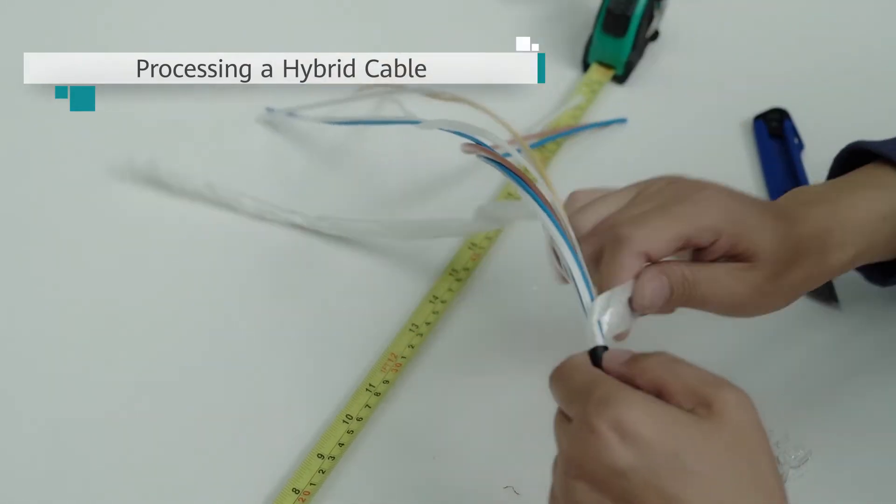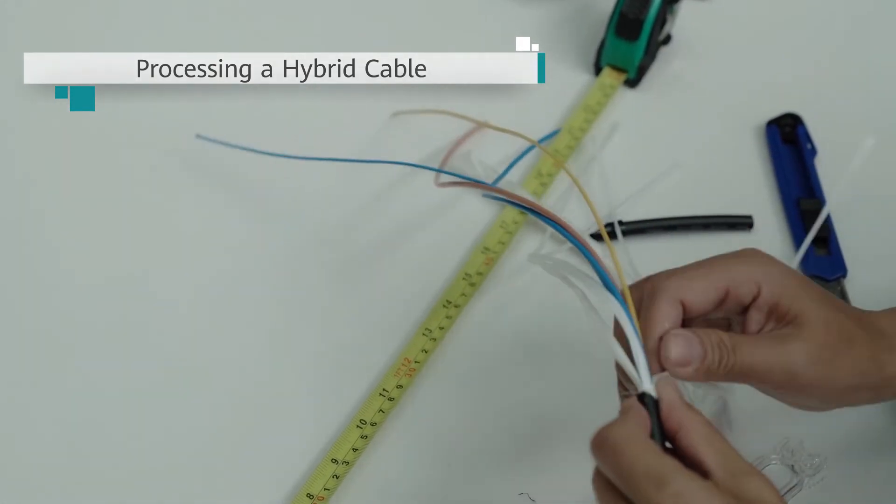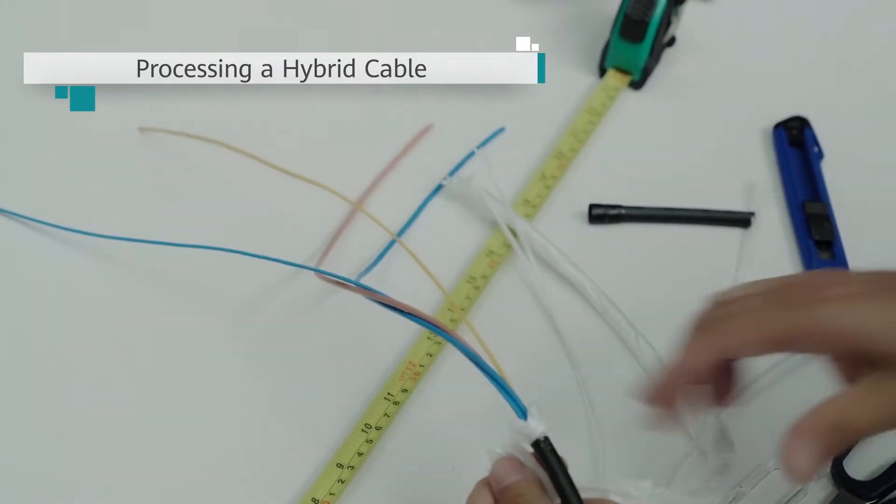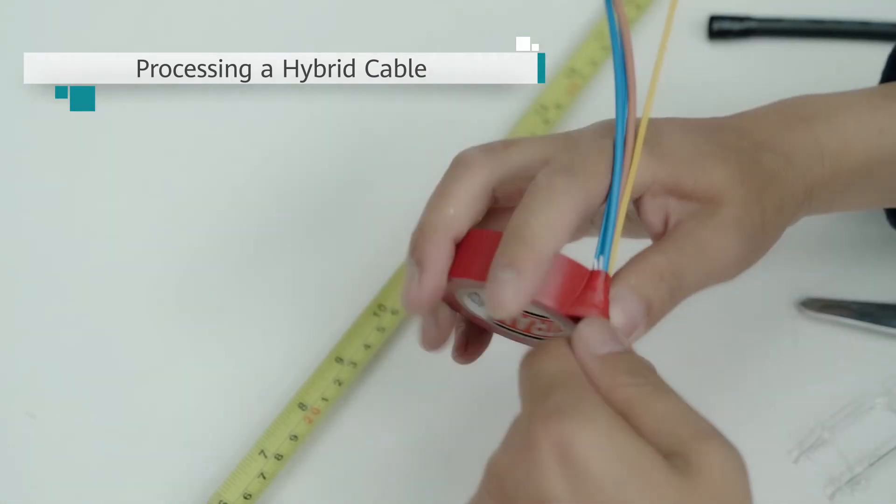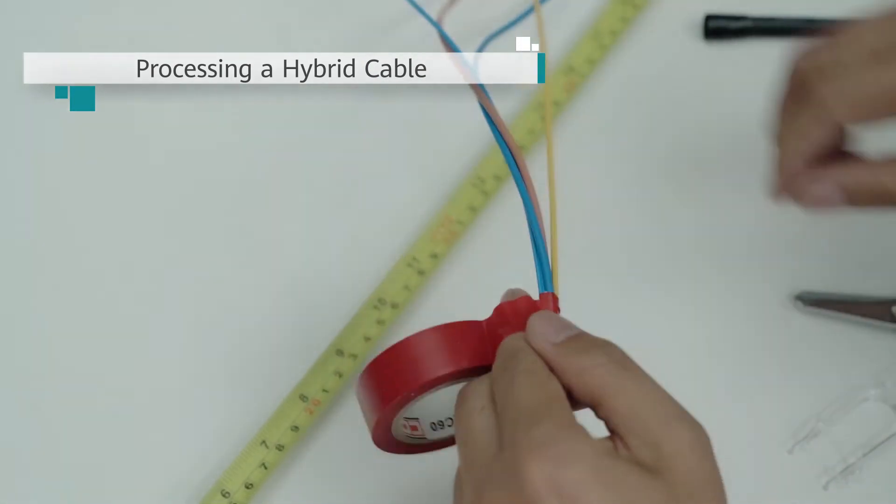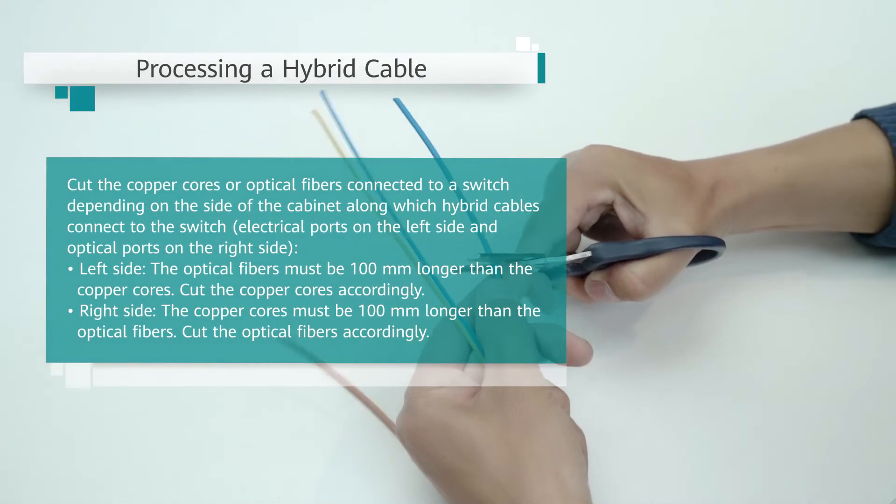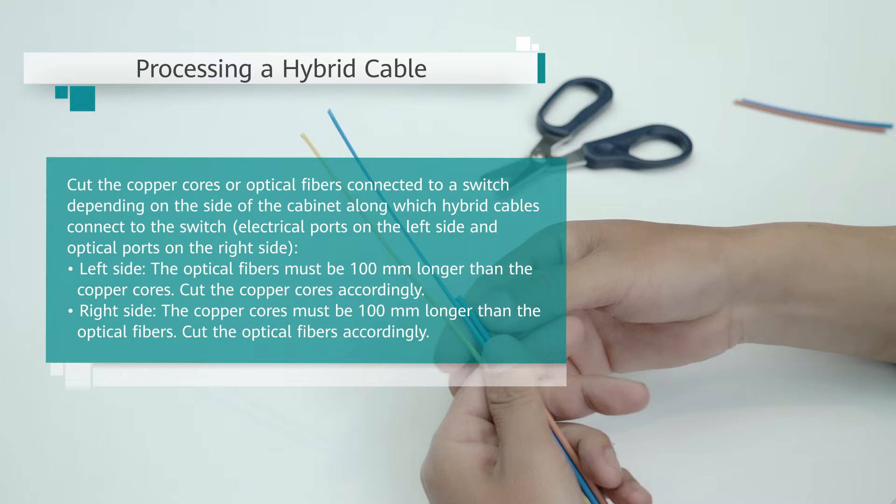Then, cut the wrapping tape to expose the optical fibers and DC copper cores. At both ends, use insulation tape to wrap around the position where the outer sheath is peeled off. Cut the copper cores or optical fibers connected to a switch depending on the side of the cabinet along which hybrid copper fiber cables connect to the switch. Note that electrical ports reside on the left side and optical ports on the right side.